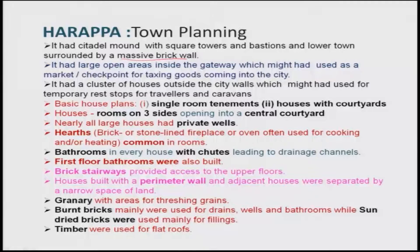There were clusters of houses outside the city walls, which might have been used for temporary rest stops for travelers or caravans. Basic house plans include single room tenements and houses with courtyards, with rooms on three sides opening into a central courtyard — similar to rural housing discussed earlier. Nearly all large houses had private wells, indicating the residents were wealthy enough to afford their own water supply.